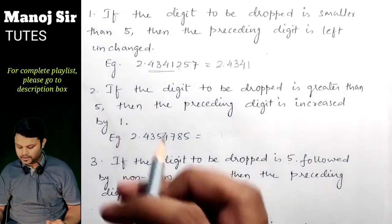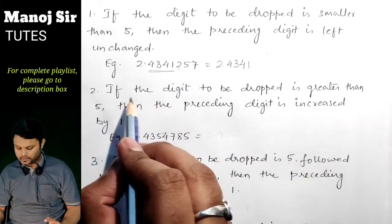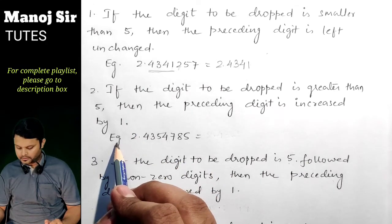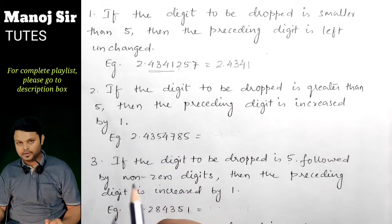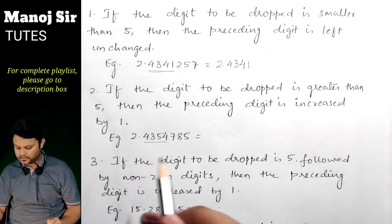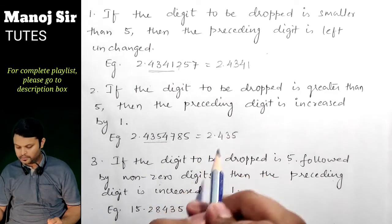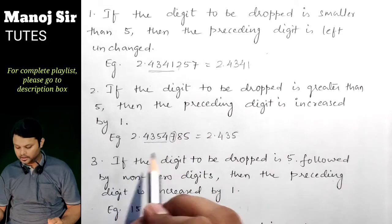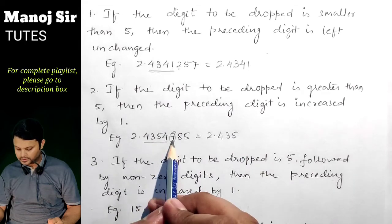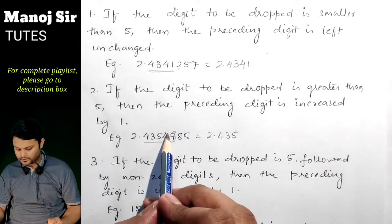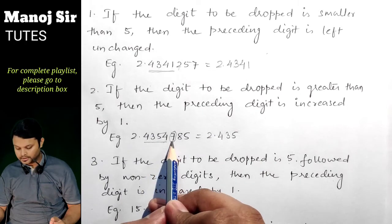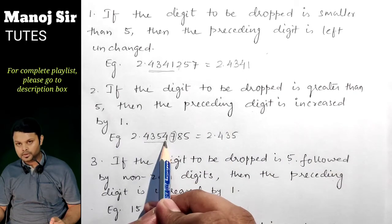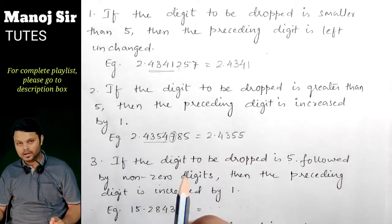The second rule: if the digit to be dropped is greater than 5, then the preceding digit is increased by 1. For example, take 2.4354785 and we want 4 decimal places, giving us 2.435 so far. The fifth digit to be dropped is 7, which is greater than 5. So the preceding digit 4 is increased by 1, giving us 2.4355.